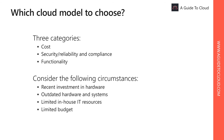When companies consider a cloud solution, they usually focus on three categories: cost; security, reliability, and compliance; and functionality. However, these three categories are not equally important for all companies. While smaller companies might favor lower cost and functionality, some larger, more complex environments might have security and compliance as their top priority.